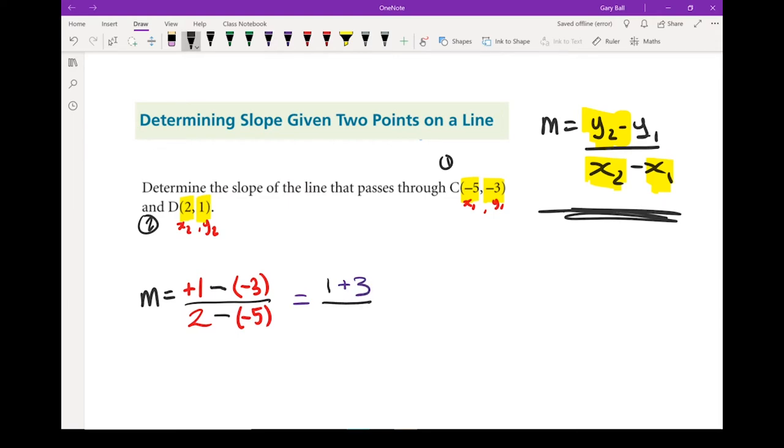And on the bottom, that 2 stays the same. I've got a negative times a negative, so on the bottom I've got plus 5.